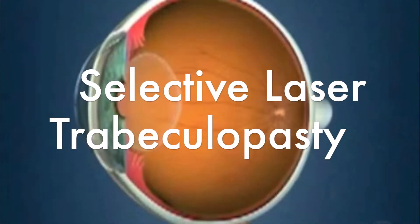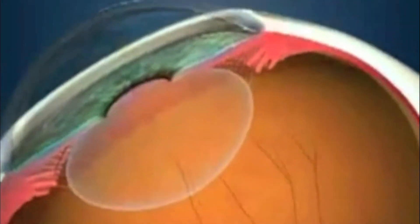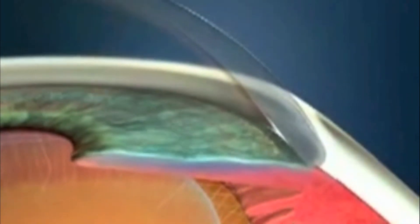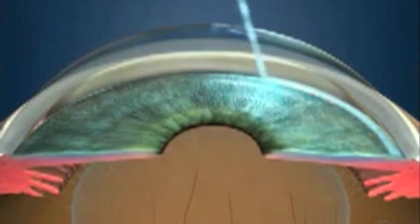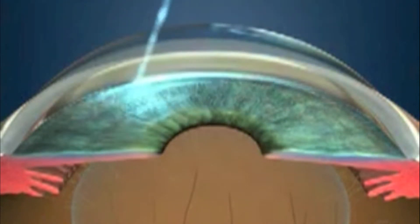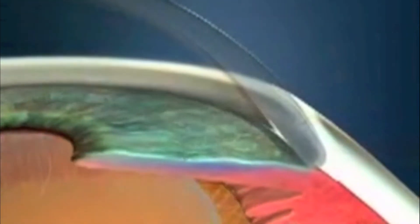Selective laser trabeculoplasty, or SLT, is the most common type of laser procedure performed for open-angle glaucoma. During the SLT procedure, the laser is directed towards the trabecular meshwork — the primary drainage region of the eye. In most cases, 100 laser applications occur around the periphery of the trabecular meshwork. The SLT procedure allows aqueous fluid to drain more easily, resulting in lower pressure in the eye. Again, a painless procedure that is tolerated well.